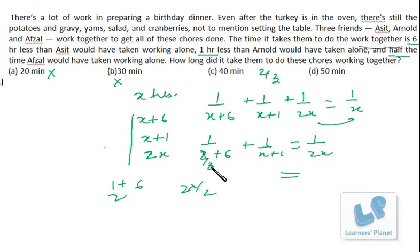Now 2/3 plus 6—that is 3 sixes are 18 plus 2 is 20—so it will be 3/20. Plus, it's 2/3 plus 1, that is 3 plus 2 is 5, so it's 3/5, or you can say it's 12/20. So it's 15/20, or we can say 3/4. So the left-hand side is 3/4 if you put x is 2/3.